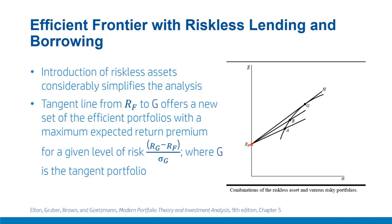If you pick any point A on this efficient frontier, the slope of this line would be RA-bar minus RF upon sigma A, which is the standard deviation or risk of security A. This is often referred to as the Sharpe ratio: RA-bar minus RF upon sigma A, where RA-bar is the expected return on security A and RF is the risk-free rate.